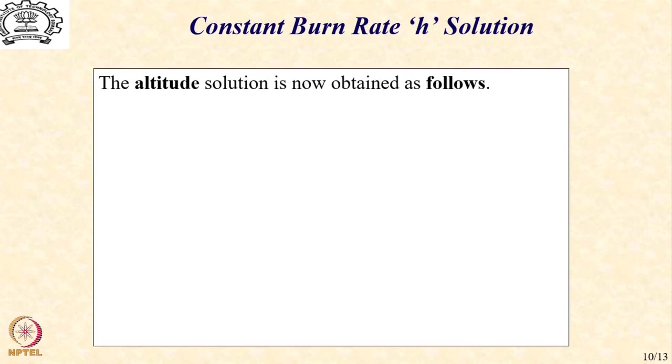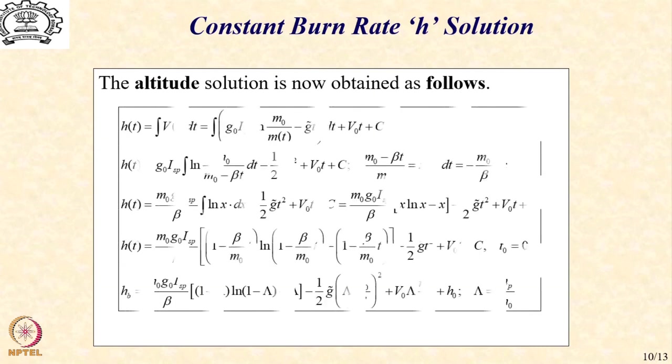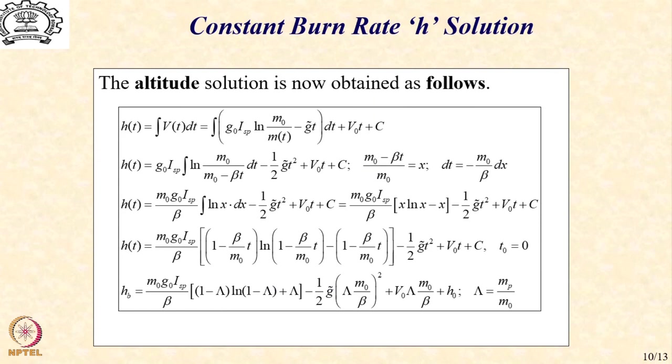With this, let us now go to the altitude solution, that is, let us integrate the velocity expression over 0 to tb to obtain the altitude. So I am showing you here the steps involved. So we take the expression for velocity, put it under the integral, also put the initial conditions and then perform this integral. I will not go through the steps in detail. My suggestion to you would be that please verify these steps and familiarize yourself with how the whole process has been completed.